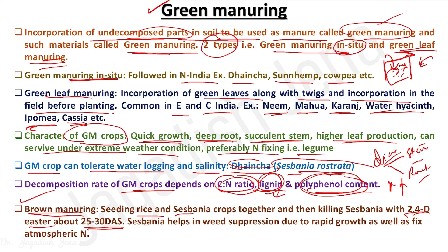As the green manuring crop grows in the space available between rice plants — plant to plant or row to row — it also restricts the growth of weeds. So brown manuring can act as a live mulch as well.